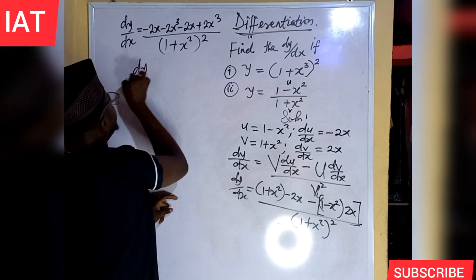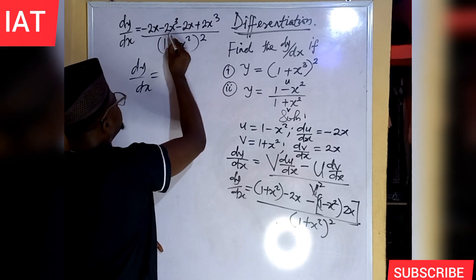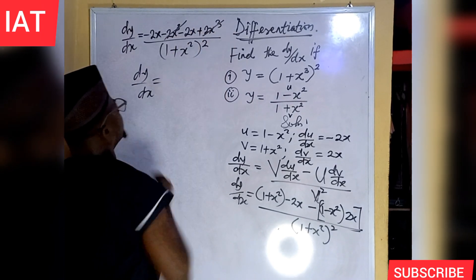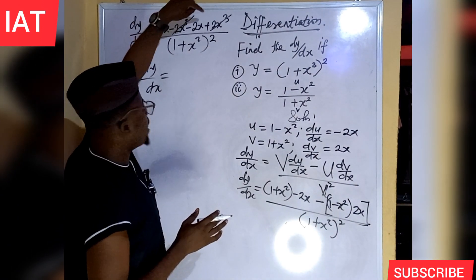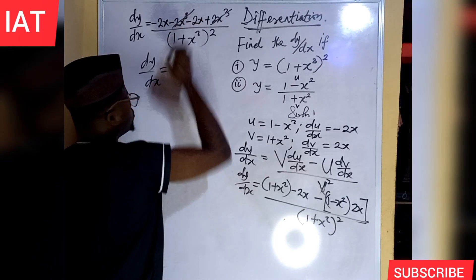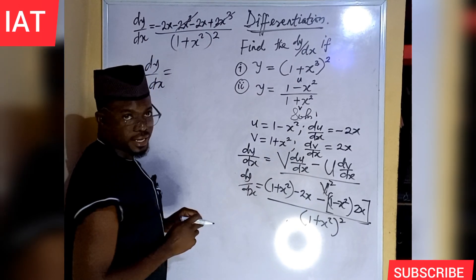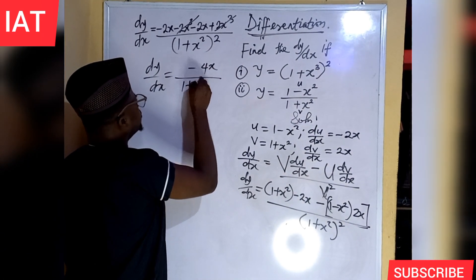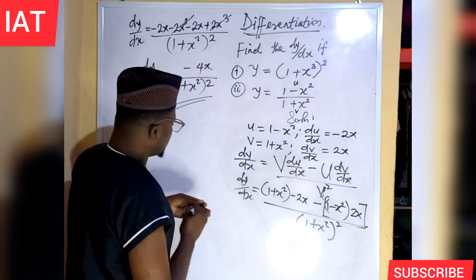So, here we have dy over dx equal to, you can observe that this minus 2x cubed plus 2x cubed will cancel out because they are common. And again, we have a negative sign there and we have a positive sign. So, it cancels out. That is 2x cubed minus 2x cubed will be 0. And what we will be left with is minus 2x minus 2x. That will give us minus 4x divided by 1 plus x squared all squared. This is the solution of this second problem.